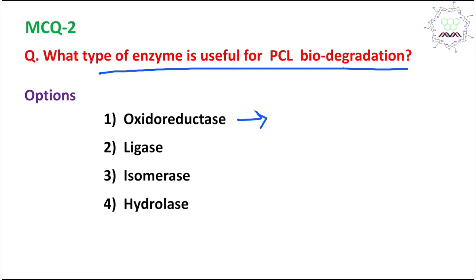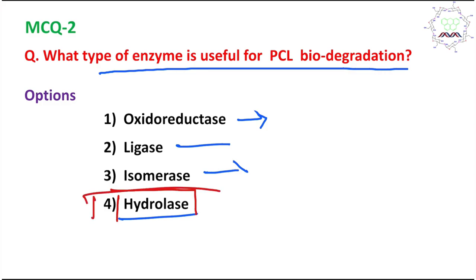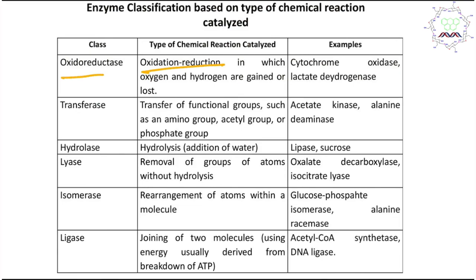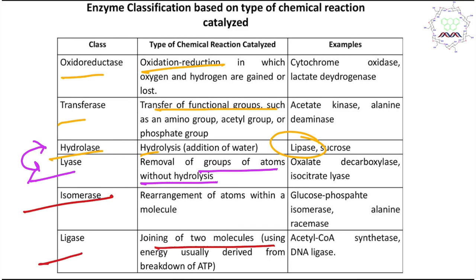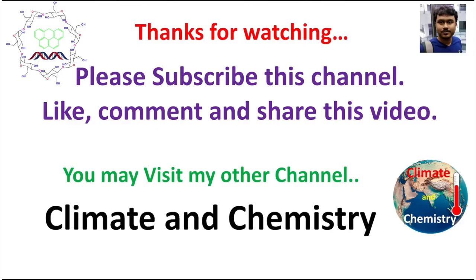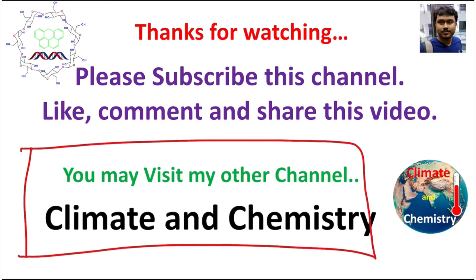For MCQ2 — what type of enzyme is useful for PCL biodegradation: oxidoreductase catalyzes oxidation-reduction, transferase transfers functional groups, hydrolase catalyzes hydrolysis (e.g., lipase), lyase removes groups without hydrolysis, isomerase catalyzes isomerization, and ligase joins two molecules. Since PCL is hydrolyzed to 6-hydroxyhexanoic acid, the answer is hydrolase. Lipase specifically is responsible for PCL biodegradation. Thanks for watching — see you in the next video.